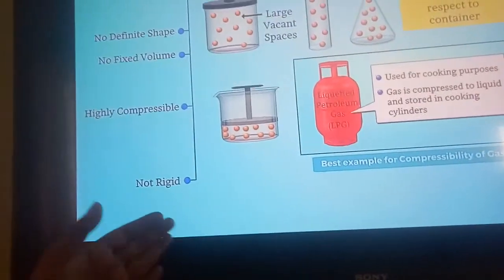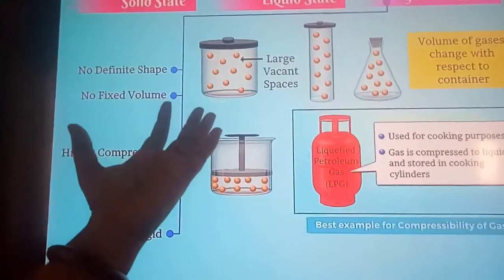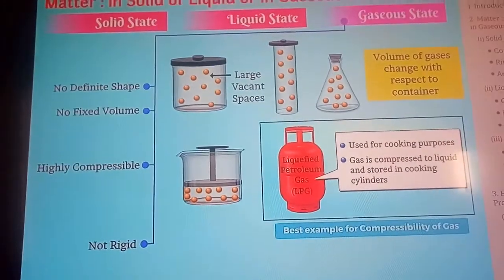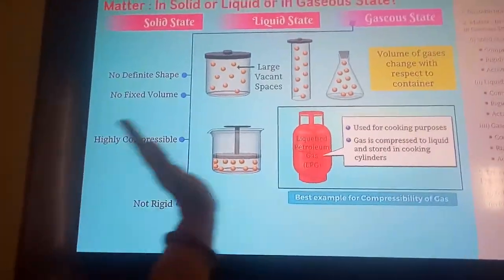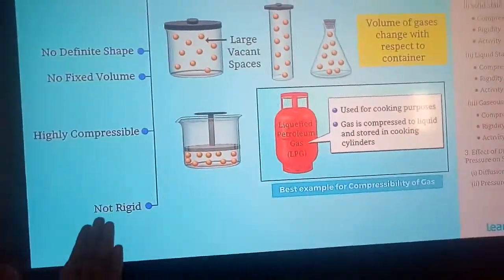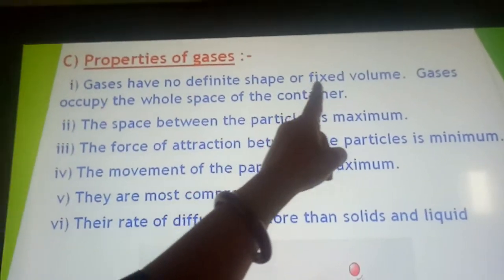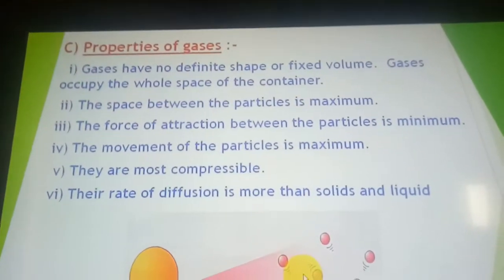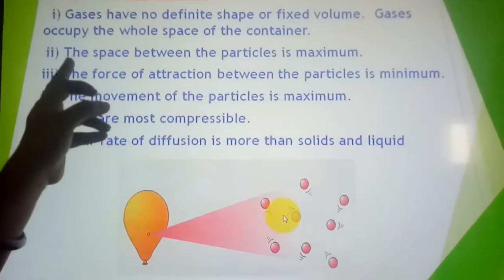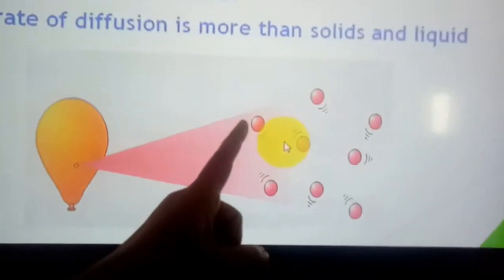Regarding rigidity: gases have very, very less rigidity. They have no fixed shape, size, or fixed volume, so naturally rigidity is very less. You can move your hand through the air easily, which shows gas has no rigidity. Gases have no definite shape or fixed volume — they occupy the whole space of the container. The space between gas particles is maximum — the particles are very, very far apart with large intercellular gaps.